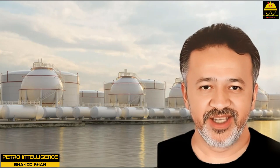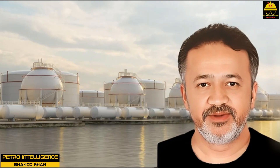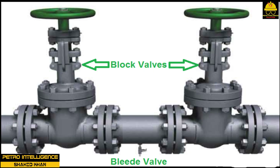A double block and bleed system is frequently used to stop flow, though this is not considered a complete shutoff. The double block and bleed consists of two valves in line with a smaller valve opening to the atmosphere between the two line valves.